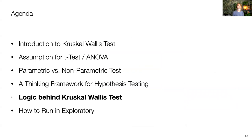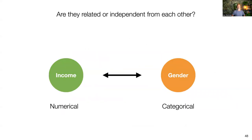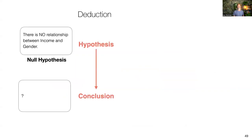Now let's get into the logic behind the Kruskal-Wallis test. Going back to the original example: income (numerical) and gender (categorical) — are they related or independent? Using the hypothesis testing framework, we start with the null hypothesis: there is no relationship between income and gender. We need to start with the null hypothesis — always 'there's no relationship' or 'zero difference' — because otherwise we cannot falsify the hypothesis. The null hypothesis makes it possible to falsify.